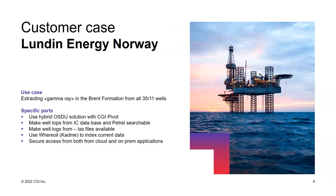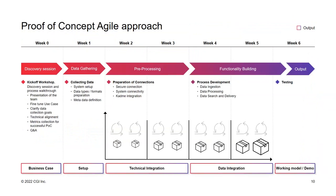With that, we were able to do analysis and search for the data through the OSU platform. We executed this proof of concept in six weeks — from the business case definition in the first week through setting up the infrastructure all the way to showing the results and demoing to the business. That really showed that OSU is a very powerful platform, and if you build it with CGI Pivot you can immediately start and execute such a proof of concept with a tremendously reduced amount of effort.